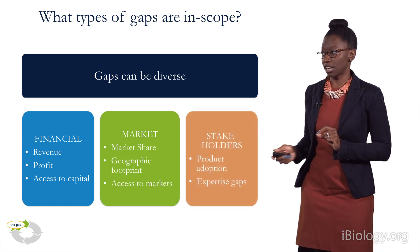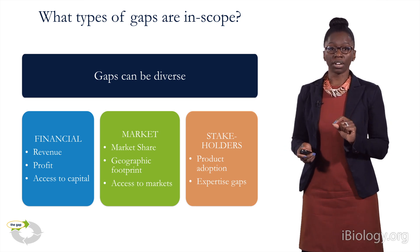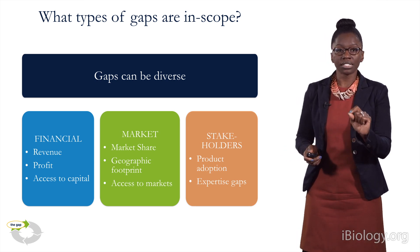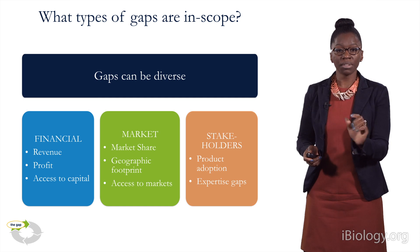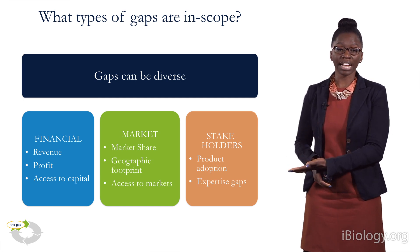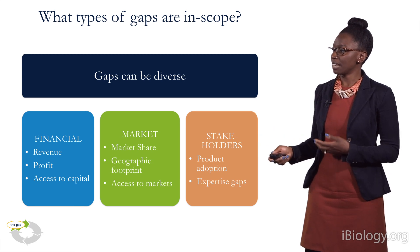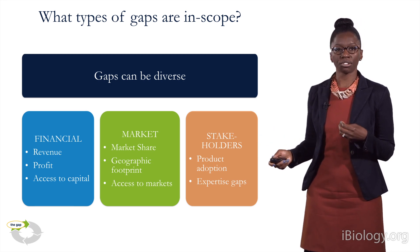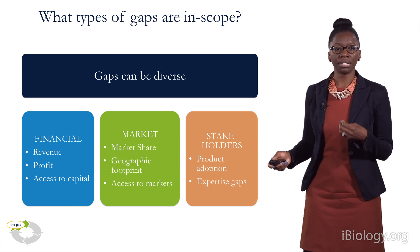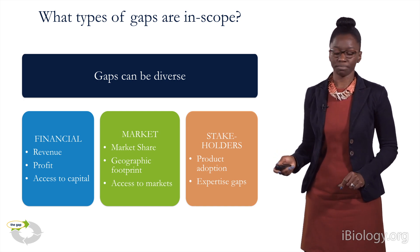And the last is stakeholders. So when you're looking for people to adopt your product and you want to make sure that all the key stakeholders have them, this is where you'll look at either product adoption or expertise gaps. These are really the three types of main gaps we think about when we're looking to create a business development strategy and understanding exactly what you're trying to solve for.